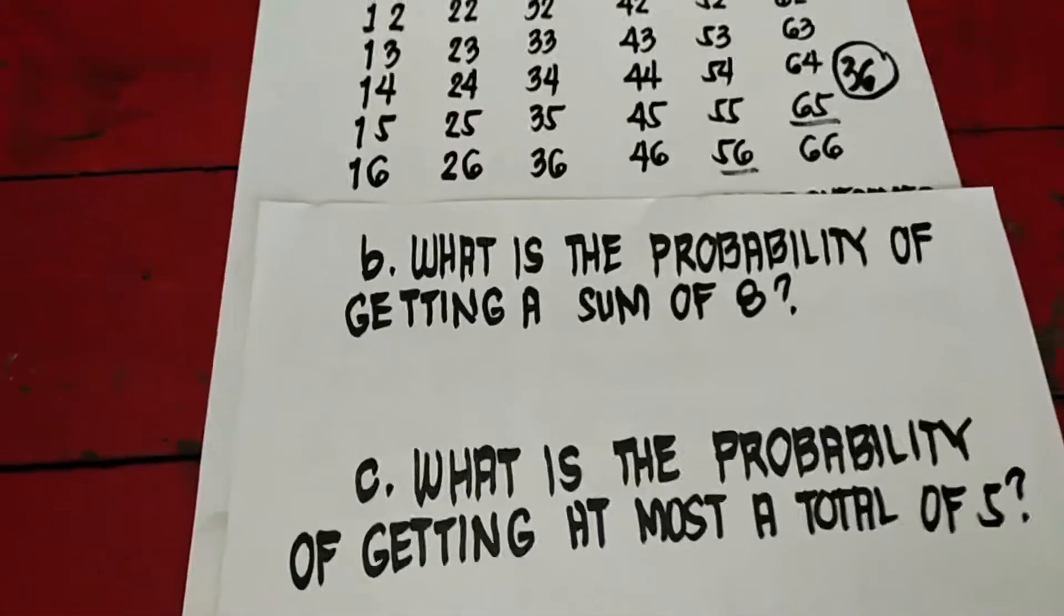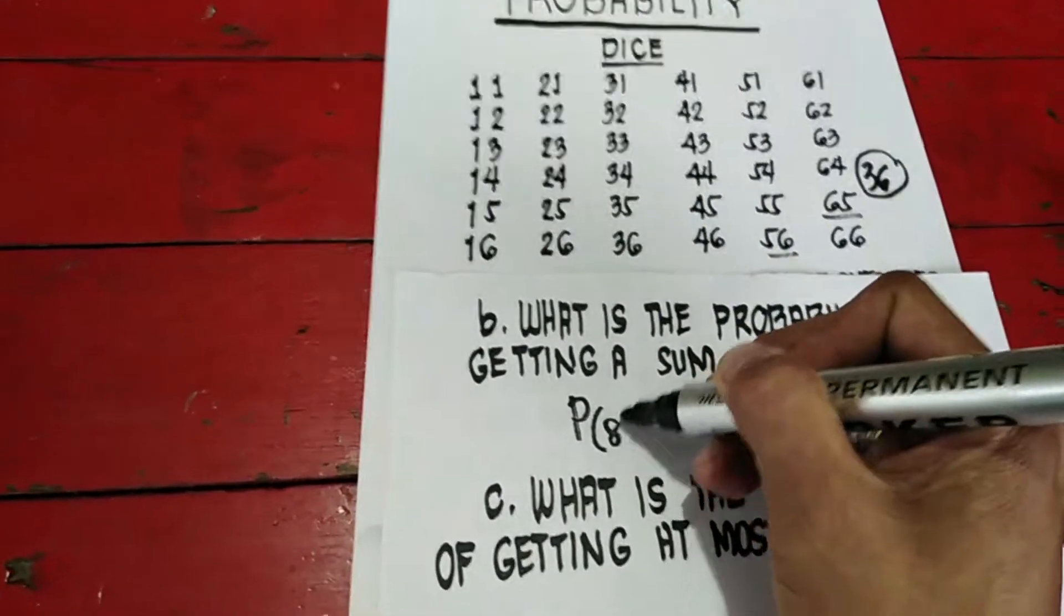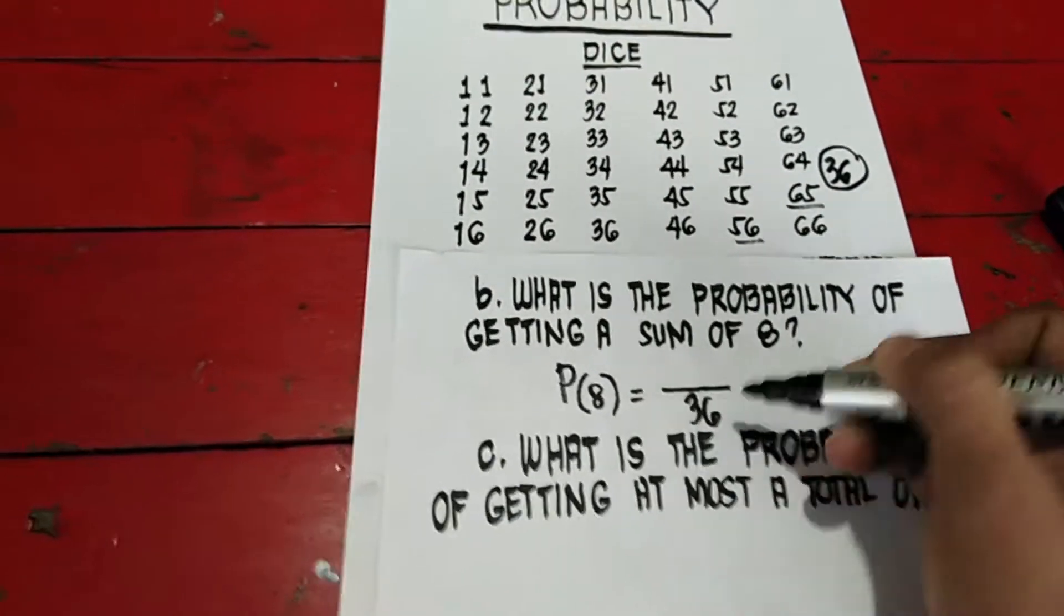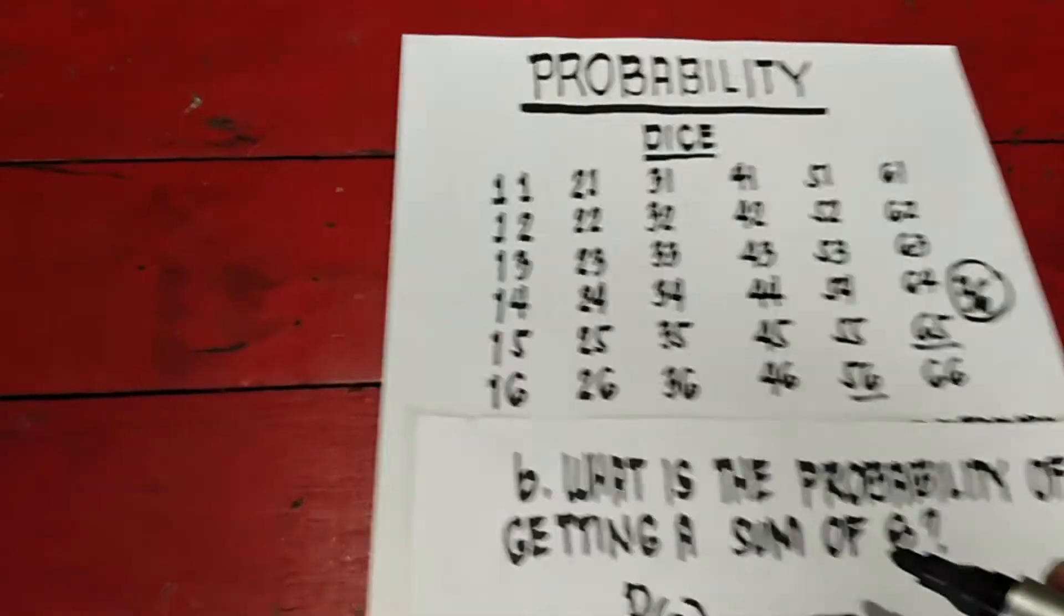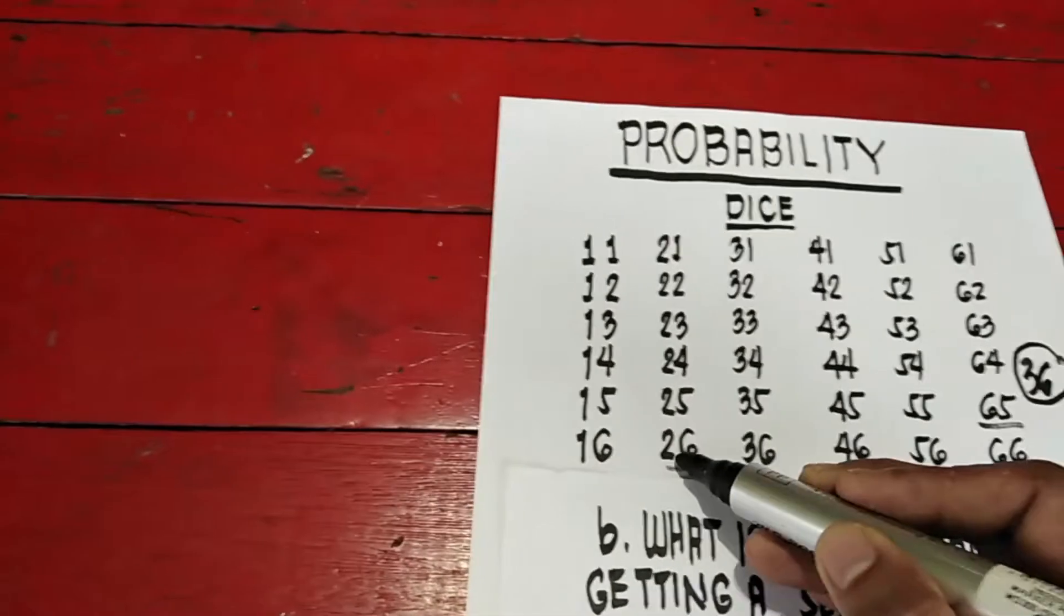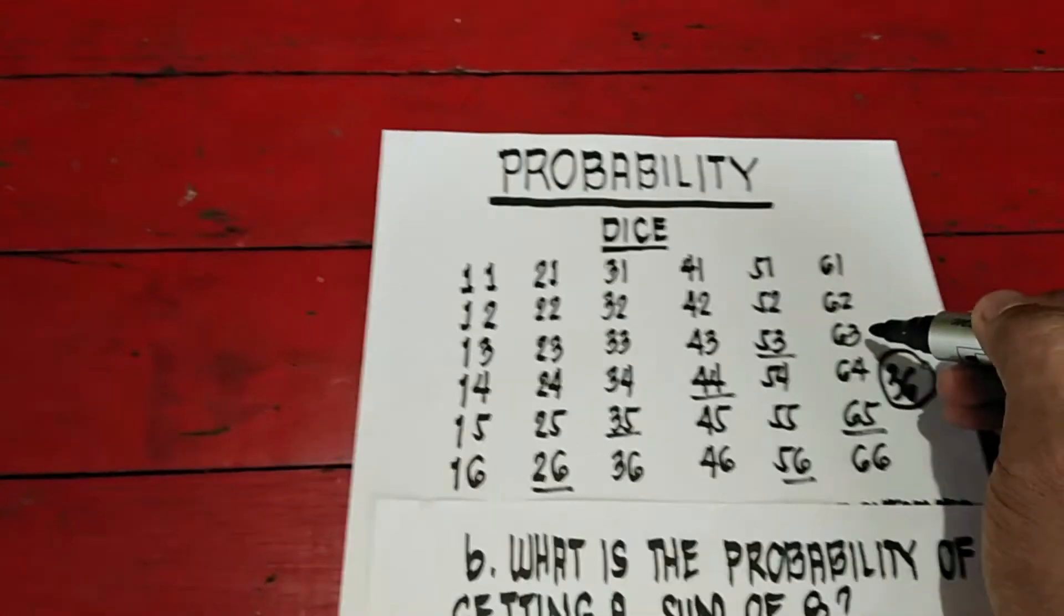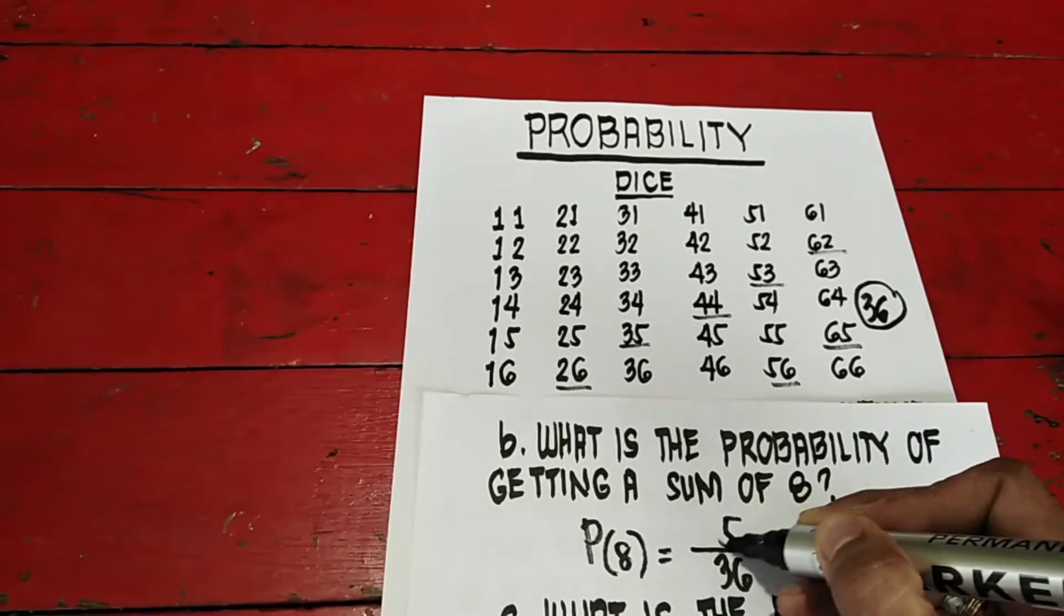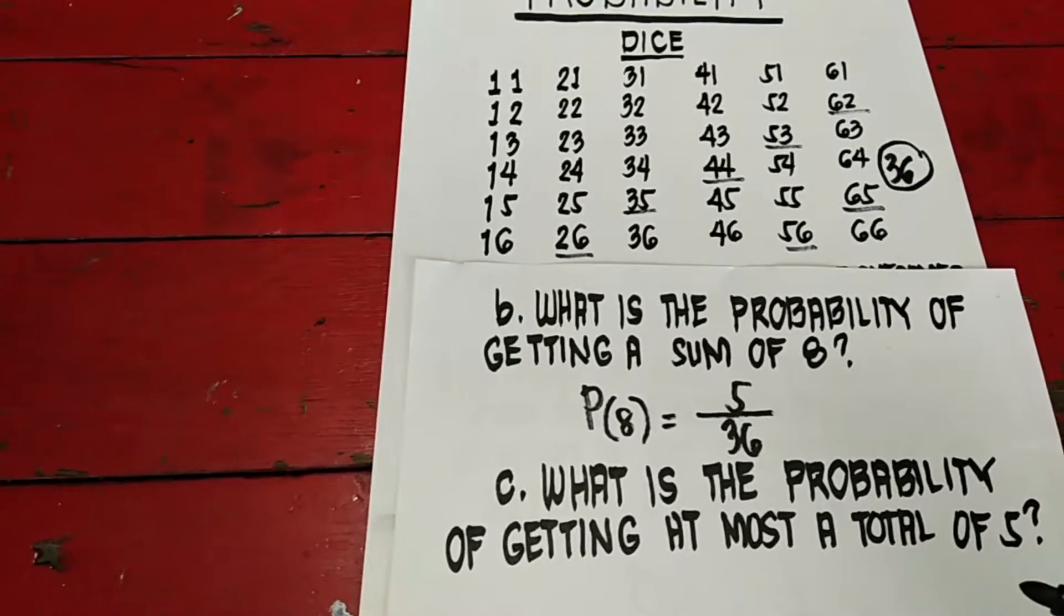Punta na tayo sa B question. What is the probability of getting a sum of 8? Ang tanong naman ngayon is the probability of getting a sum of 8. Yung sa baba, palaging total is 36. Ano naman yung sum na 8? Hahanap tayo doon. Ang data natin, ang sum nila ay 8 is: 2 plus 6, 3 plus 5, 4 plus 4, 5 and 3, and 6 and 2. That is 5. May lowest pa ba ang 5 over 36? Wala na kasi prime number na yun. Yan na yung answer natin.